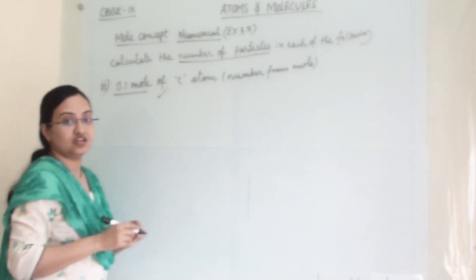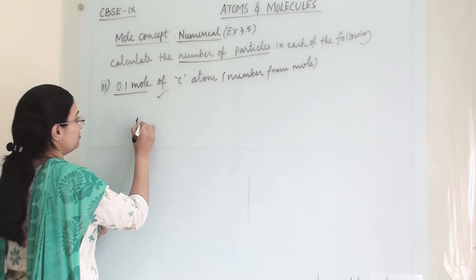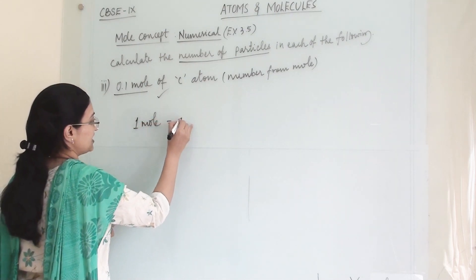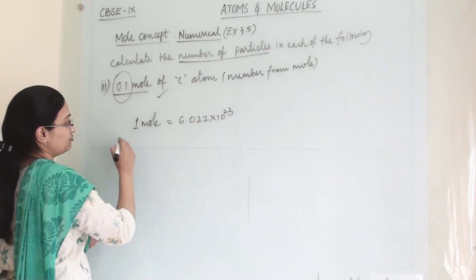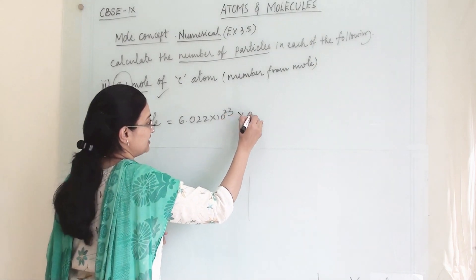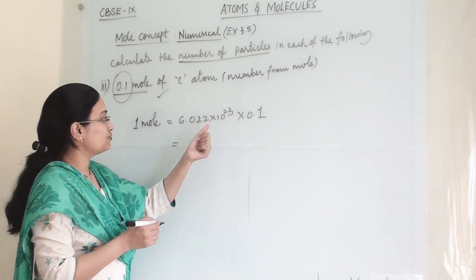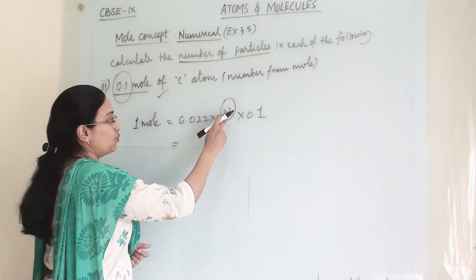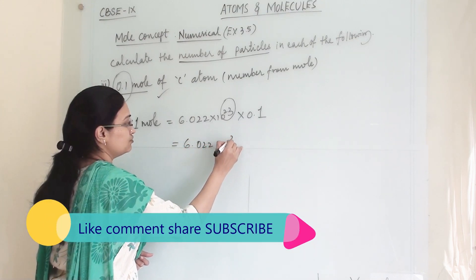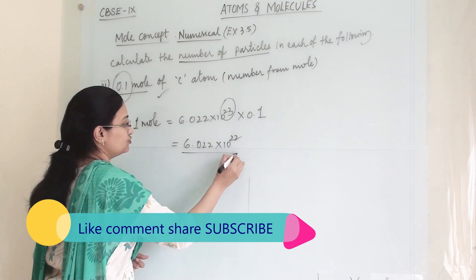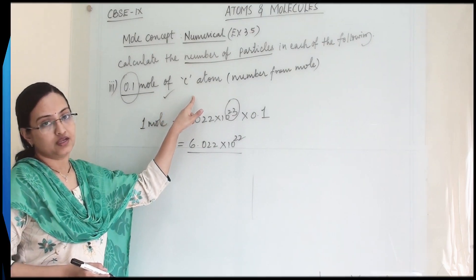We can find this in one step. This kind of question will be asked in fill in the blank and multiple choice questions. When one mole of substance has 6.022 × 10^23, we simply multiply with 0.1. Either you can write 0.6 × 10^23 or subtract one digit from the exponent. So I will write 6.022 × 10^22. This is the number of particles present in 0.1 mole of carbon atom.